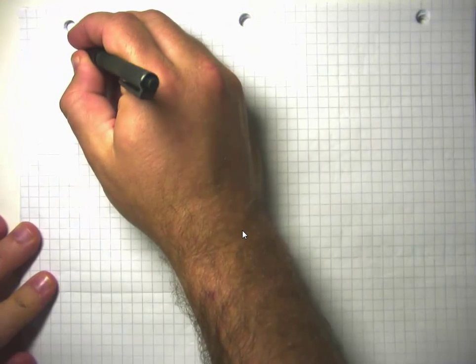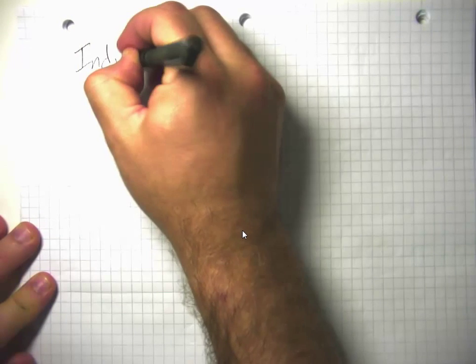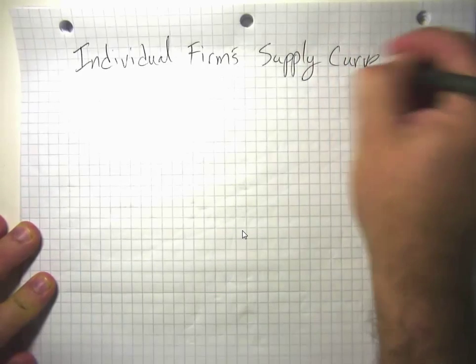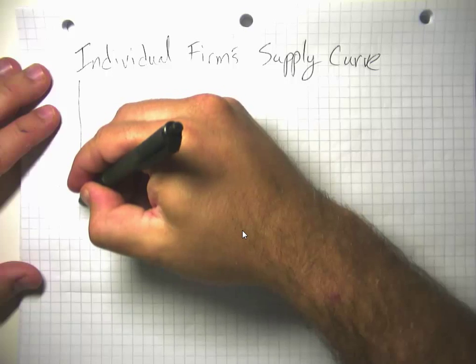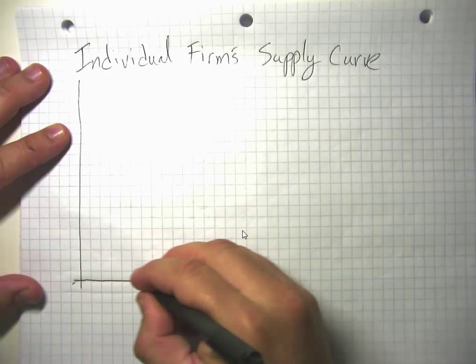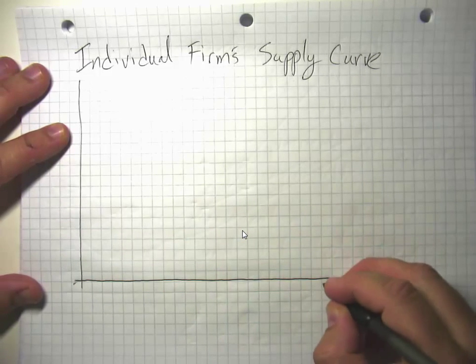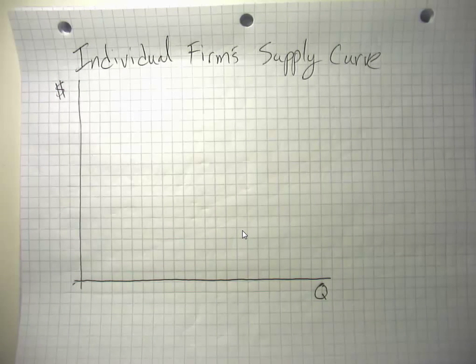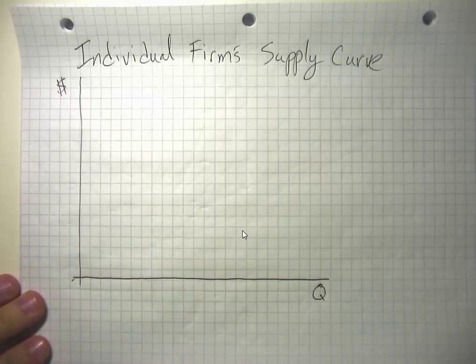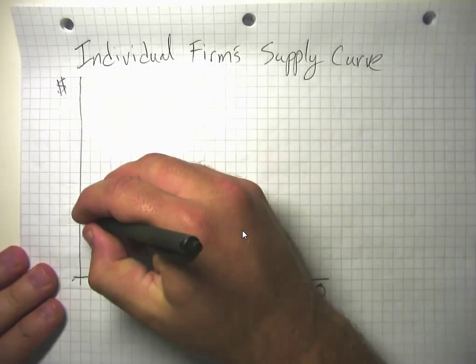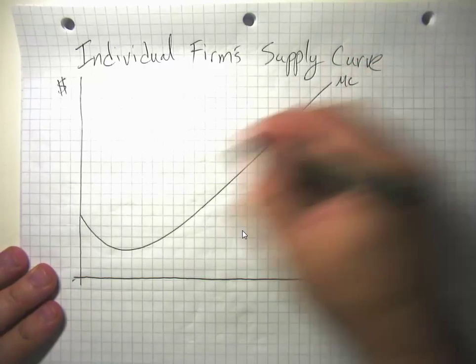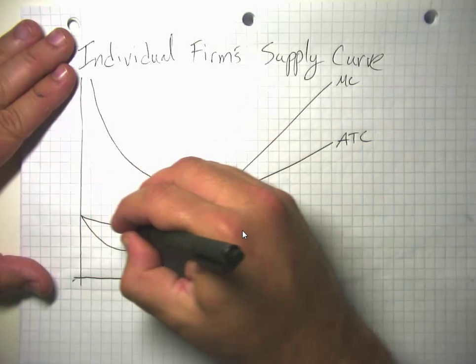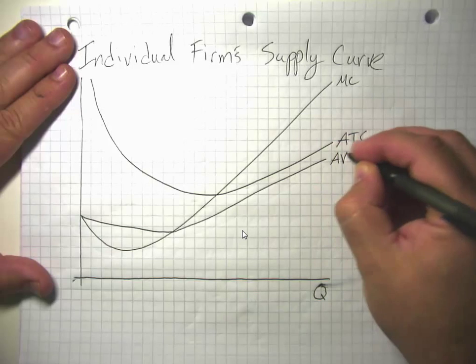Let me talk about the individual firm's supply curve under perfect competition. Let me start again with our cost curves. In perfect competition, the cost curves are absolutely central. That comes down to the fact that we have no product differentiation. The only thing that firms compete on is price, and if you're only competing on price, cost becomes absolutely crucial. We're going to have our marginal cost curve, our average total cost curve, and our average variable cost curve.